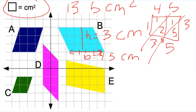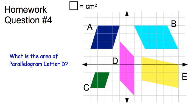Here's your last homework question: find the area of parallelogram D. You're going to need to find the base and the height on the grid and use your formula for a parallelogram to find the area of parallelogram D. Enter that on your Google form. Thanks and have a good night.